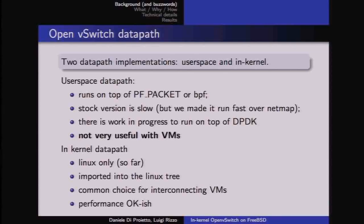There is another option: have the data path completely within the kernel, mostly replacing the software switch or bridge that Linux, FreeBSD, or other operating systems provide. OpenVSwitch includes only a Linux implementation of the in-kernel data path, which was imported into the Linux kernel tree. It is a very common choice for interconnecting virtual machines.